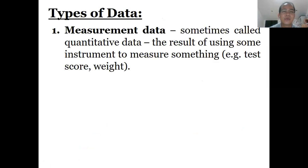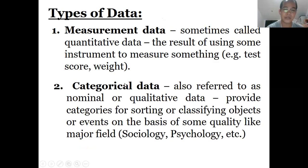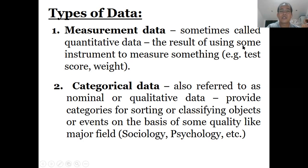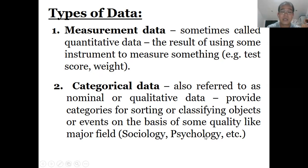There are two types of data: measurement data and categorical data. Measurement data is sometimes called quantitative or numerical data — the result of using some instrument to measure something. The data have values; examples include test score, weight, and accuracy. Categorical data, referred to as nominal or qualitative data, only provides categories for sorting or classifying objects or events on the basis of some quality. Examples include gender or sex.